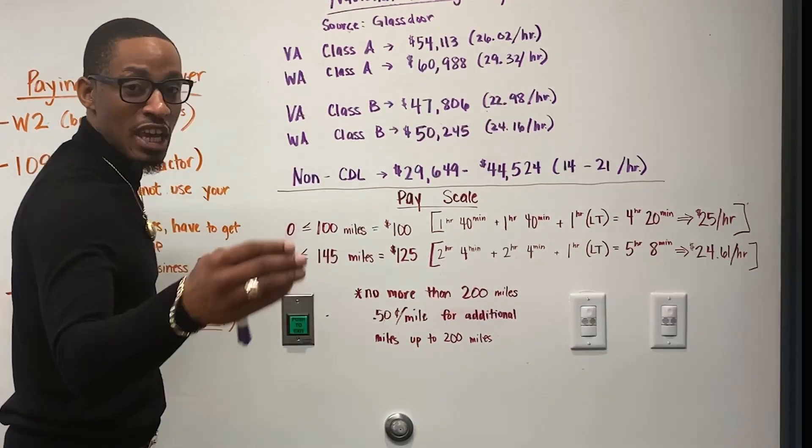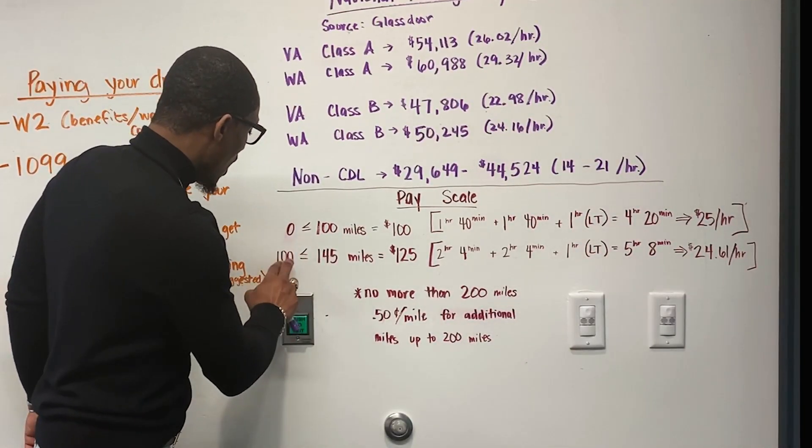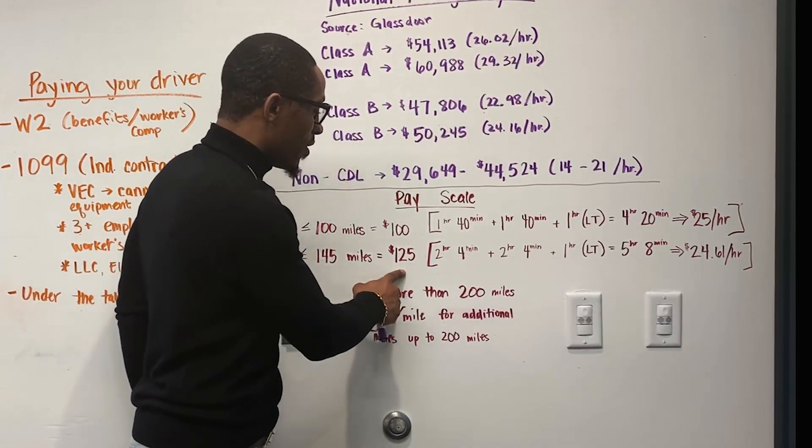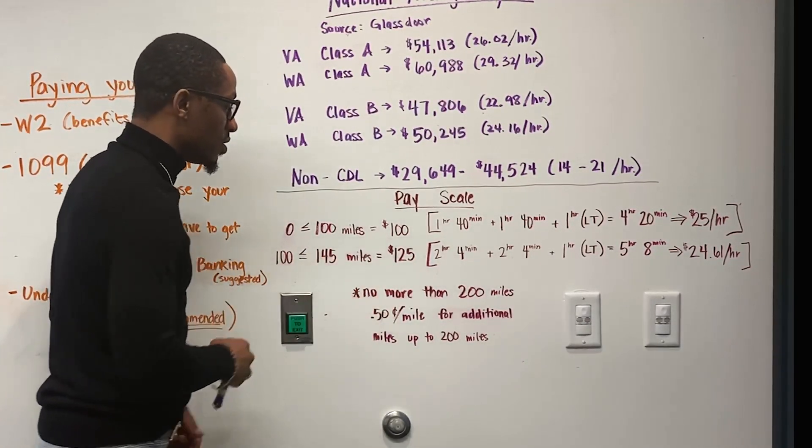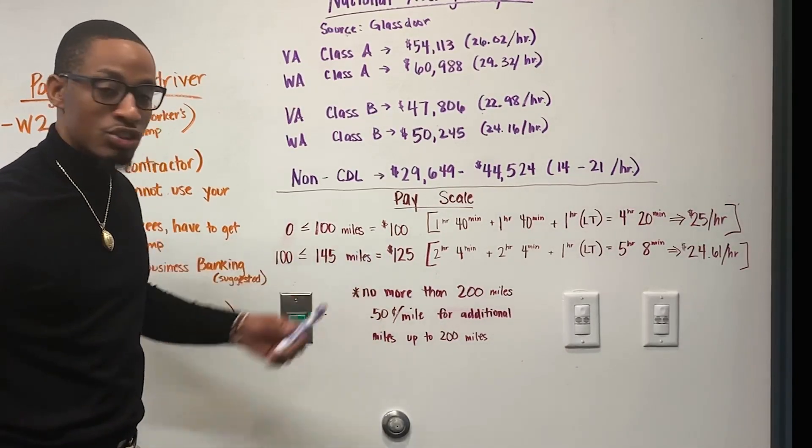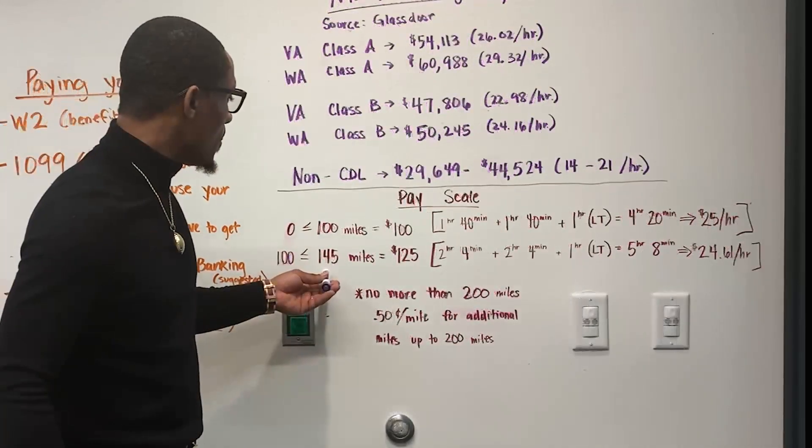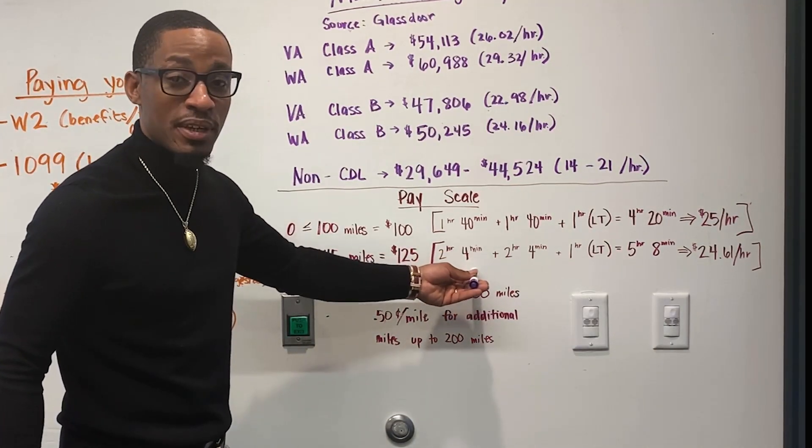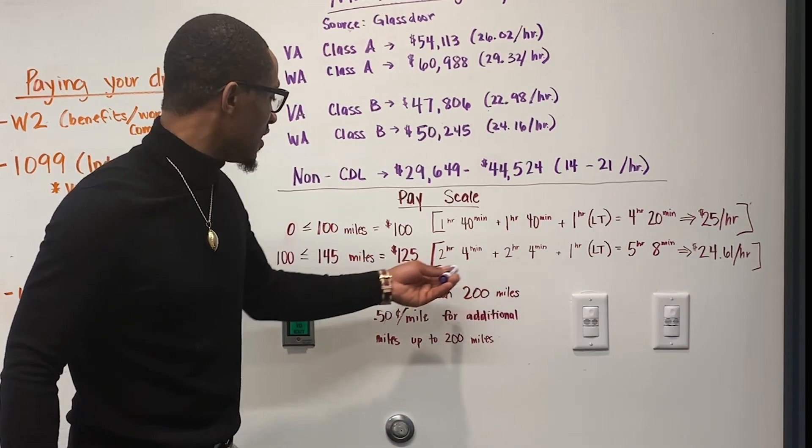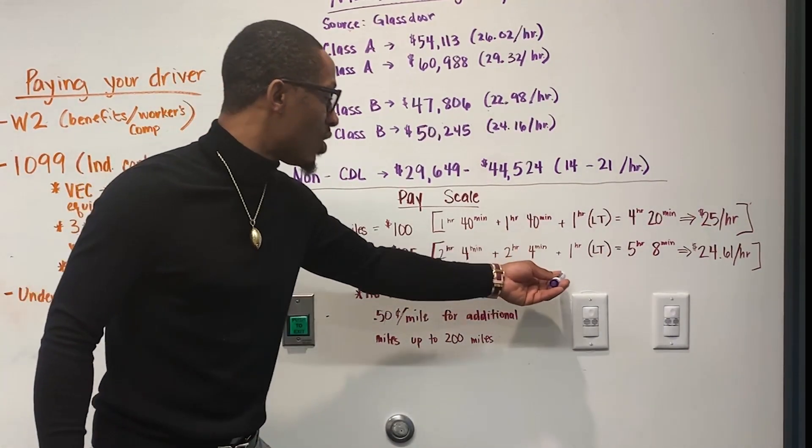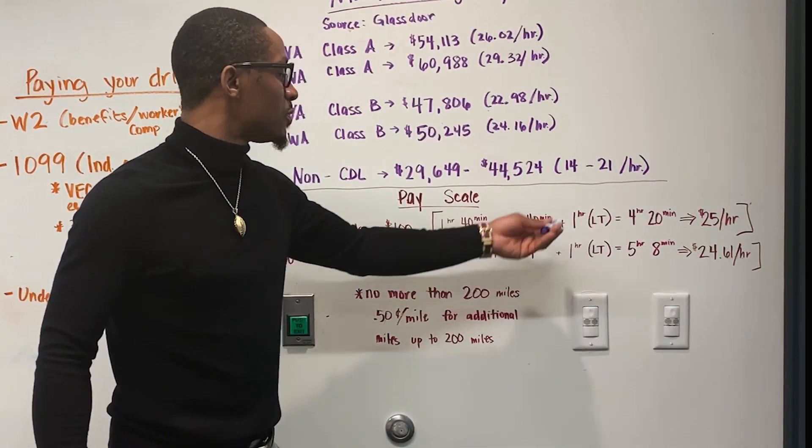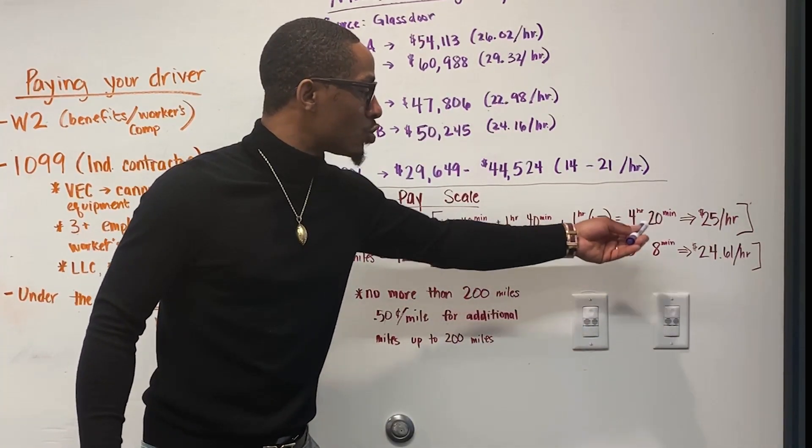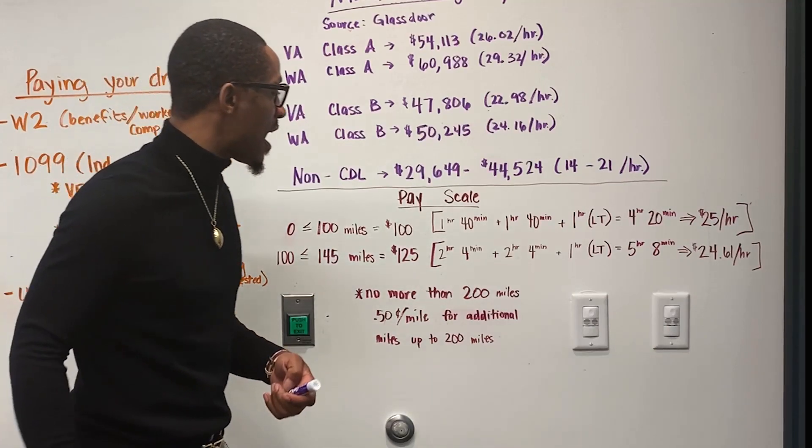Second part of that pay scale, anything from 100 miles to 145 miles, we're going to pay the driver $125. Here's your justification. The amount of time it takes to drive 145 miles, that time is two hours and four minutes. So you take from facility to destination, two hours and four minutes back home, plus that two hours and four minutes, plus the hour load time will equal five hours and eight minutes, which translates to $24.61 an hour.